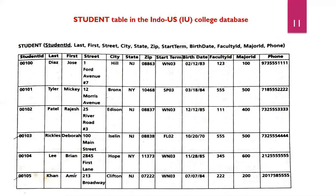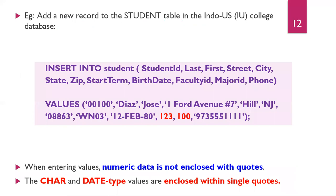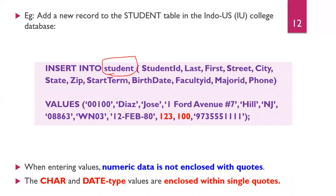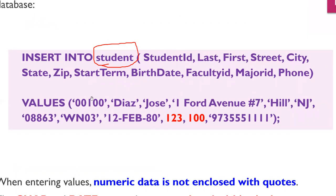We are following two databases in the prescribed book. The first is the student database. Adding a new record to the student table under the college database: INSERT INTO student followed by the table name. The student table has 9 columns including student ID, last name, first name, street, city, state, zip, start term, birth date, faculty ID, major ID, and phone.